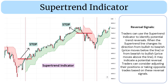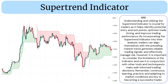Traders can use the supertrend indicator to identify potential trend reversals. When the supertrend line changes its direction from bullish to bearish — price moves below the line — or from bearish to bullish — price moves above the line — it may indicate a potential reversal. Traders can consider adjusting their positions or taking opposite trades based on these reversal signals.